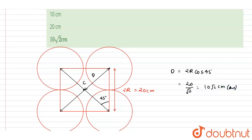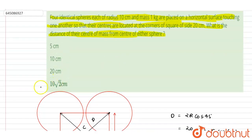10 root 2, so if you see here, d is the correct option. Thank you.